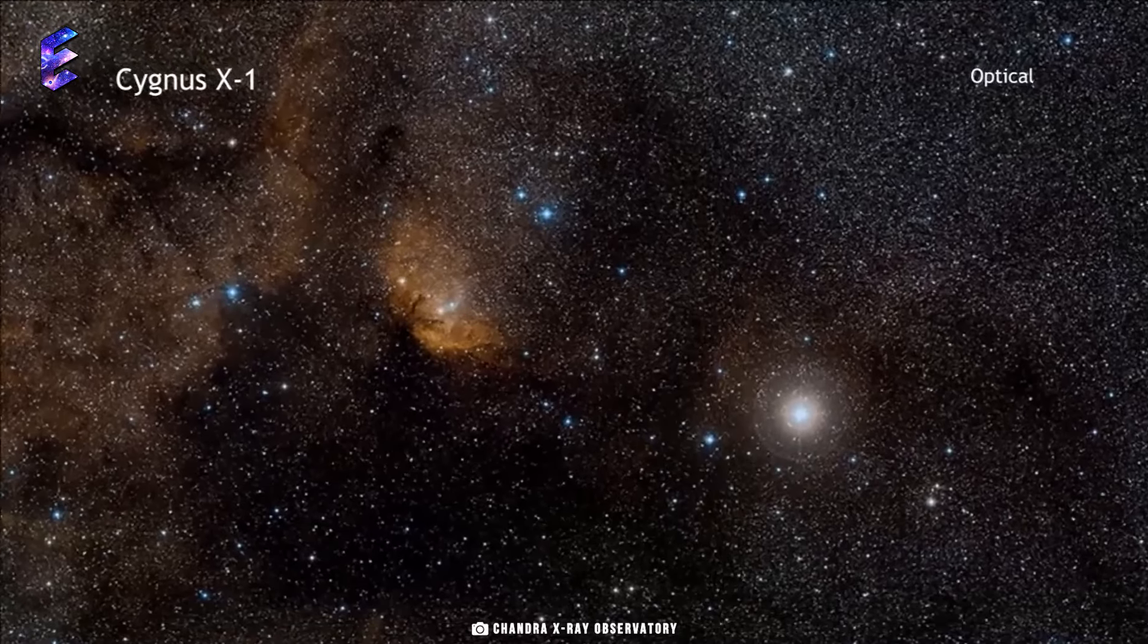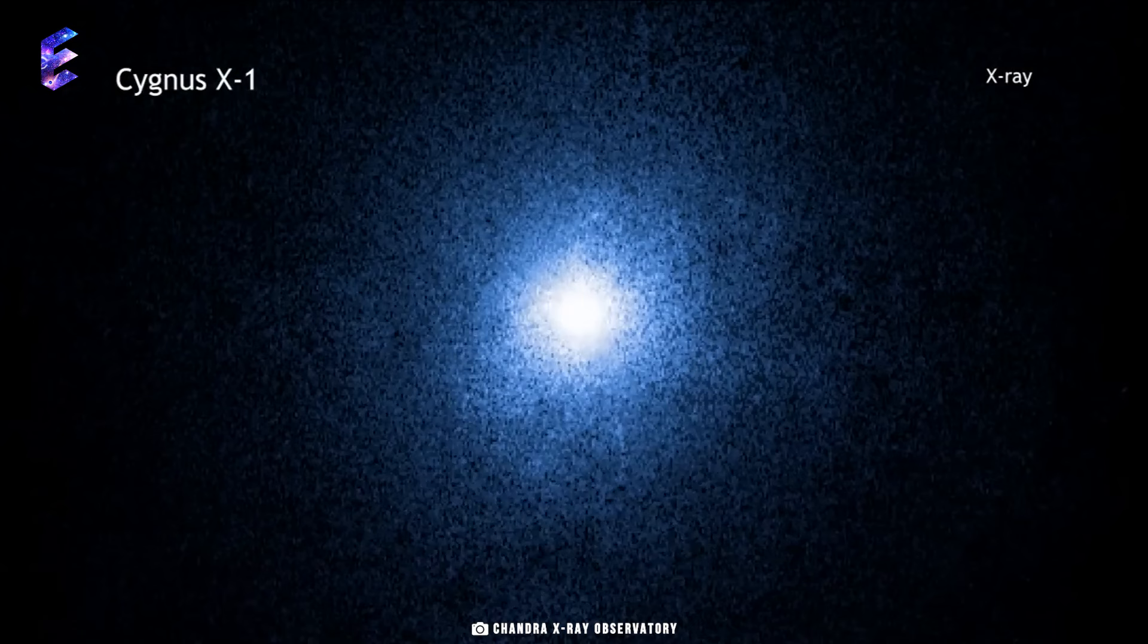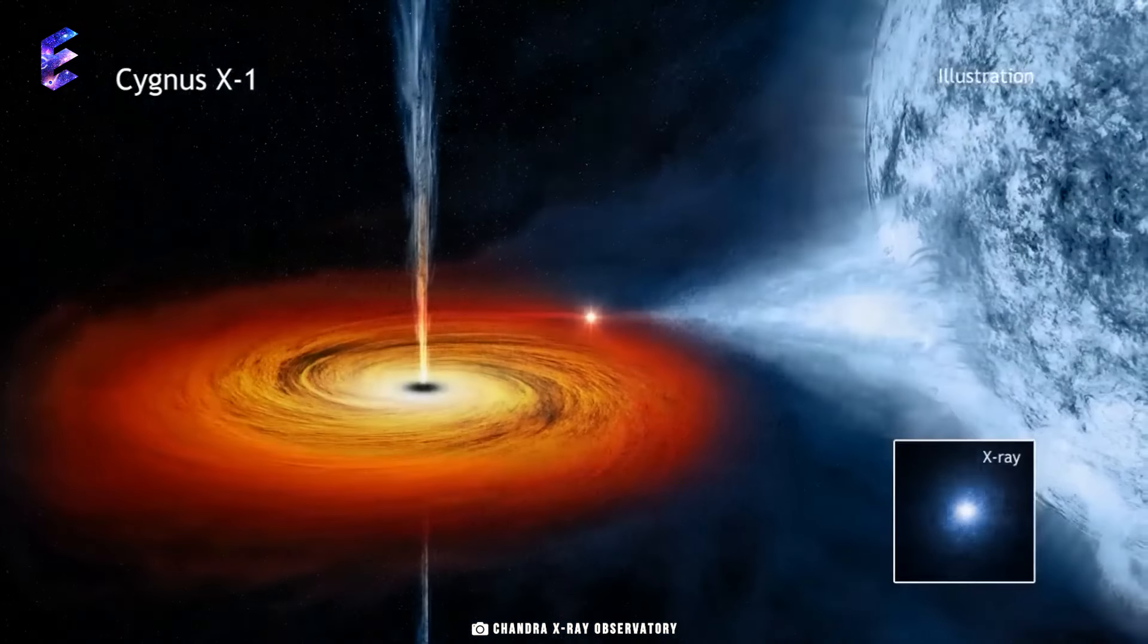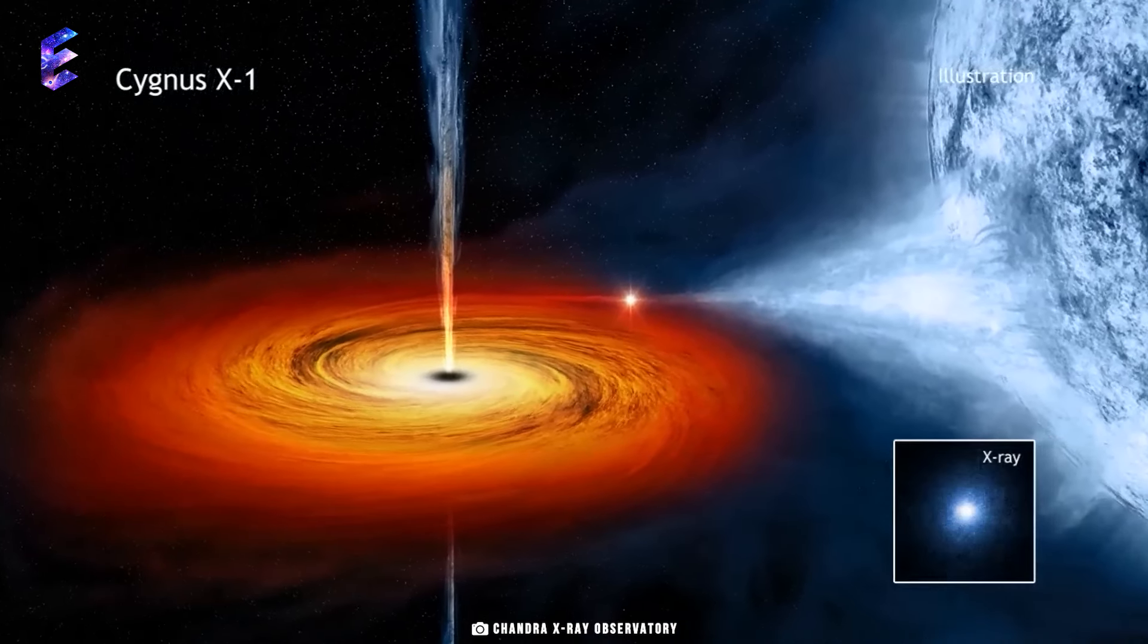The last record holder for the most massive black hole near Earth was Cygnus X-1, which was 20 times solar mass. The average mass of stellar mass black holes in our Milky Way is 10 times solar mass.